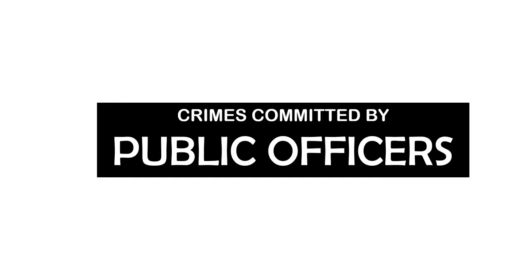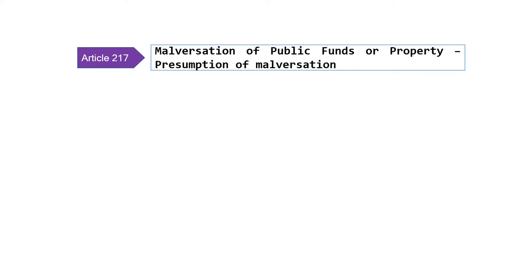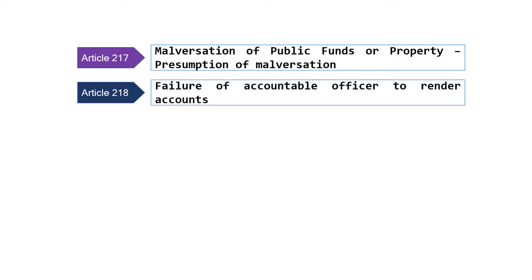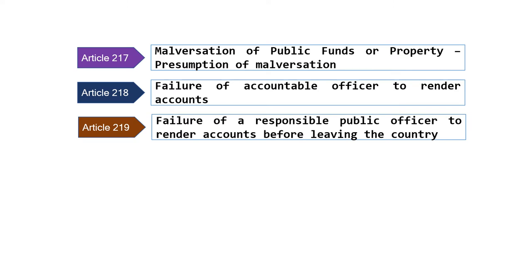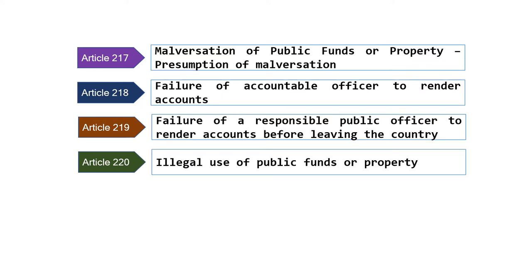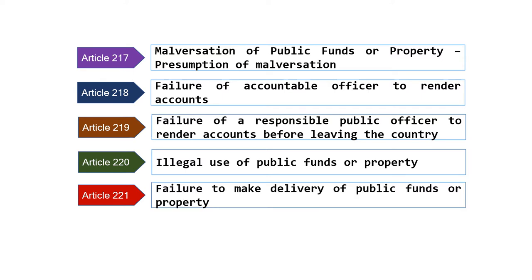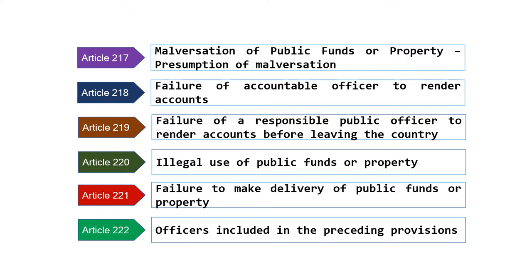This video is about crimes committed by public officers — this is already Part 2. In this video, we are going to discuss Article 217, which is a bar exam favorite: malversation of public funds or property, including the presumption of malversation. Article 218 is the failure of an accountable officer to render accounts. Article 219 is the failure of a responsible public officer to render accounts before leaving the country. Article 220 is another bar exam favorite — the illegal use of public funds or property, known as technical malversation. Article 221 is the failure to make delivery of public funds or property. And last is Article 222, the officers included in the preceding provisions.